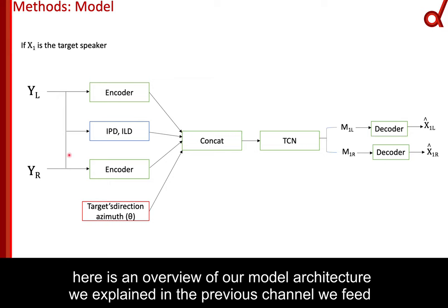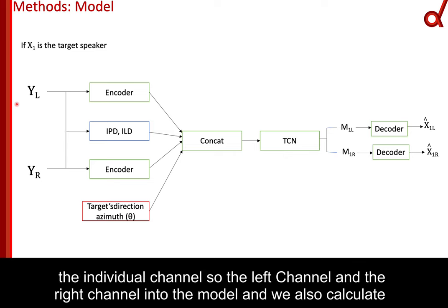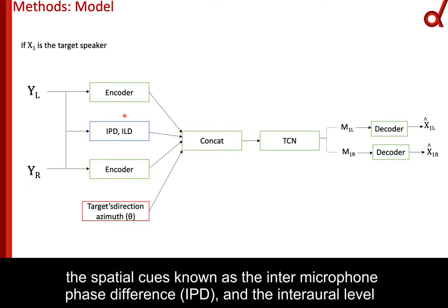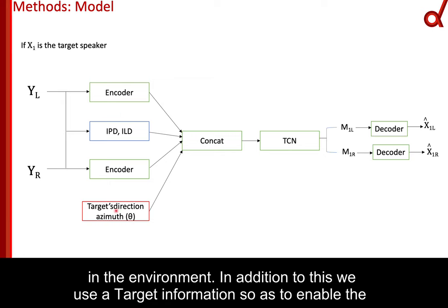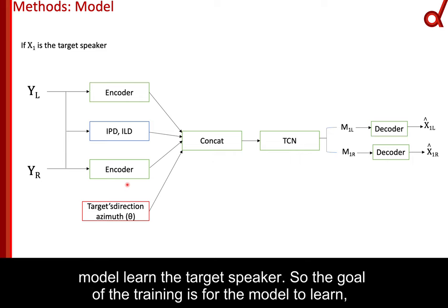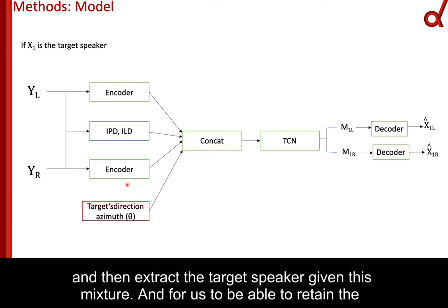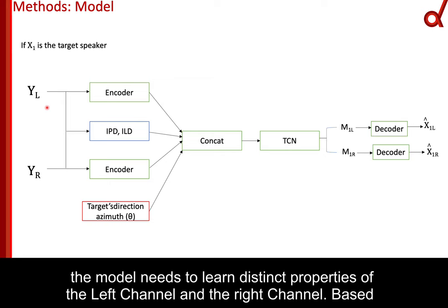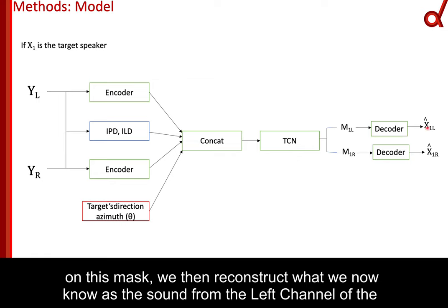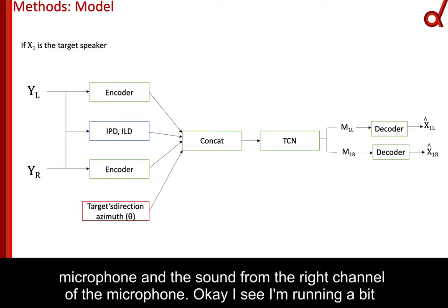Here is an overview of our model architecture. We feed the individual left and right channels into the model. We also calculate spatial cues — known as the inter-microphone phase difference and the interaural level difference — from the mixture, which is what the microphone would originally capture in the environment. We also use target information to enable the model to learn the target speaker. To retain the movement properties and help CI listeners maintain a sense of localization, the model learns distinct properties of the left and right channels, then reconstructs the sound from each channel.